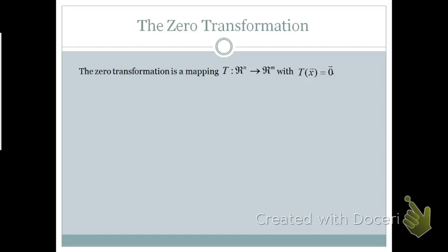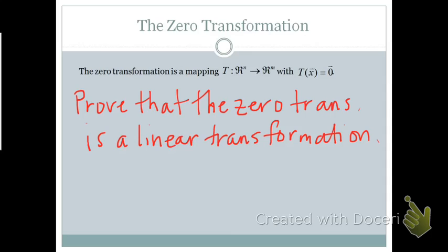The zero transformation is a mapping T from Rn to Rm with T(x) equal to the zero vector. Try to prove on your own that the zero transformation is a linear transformation. Start by having vectors u and v in Rn, so T(u) = 0 and T(v) = 0, then complete the proof using the techniques from the last section.